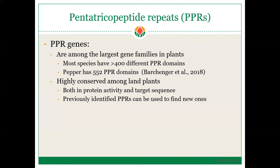PPRs are among the largest gene families in plants. Most species have more than 400; pepper has 552. They are highly conserved among land plants both in protein activity and target sequence, which means previously identified PPRs can be used to find new ones. Importantly, PPRs are not solely involved in restoration of fertility — they have many functions including response to abiotic and biotic stress, and are involved in many aspects of normal plant physiology.